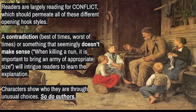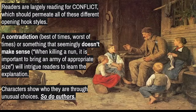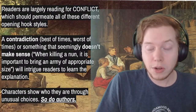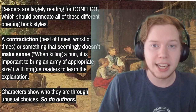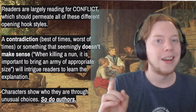Conflict should permeate all styles of hook or opening page. A contradiction — like 'it was the best of times, it was the worst of times' — asks how it could possibly be both. There's a fantasy book called Red Sister that opens: 'When killing a nun, it is important to bring an army of appropriate size.' That tells us nuns in this world must be incredibly powerful or dangerous — which intrigues readers to find out the explanation. Characters show who they are through unusual choices. Think of Die Hard — the tough cop who is terrified on a plane. We're looking for unusual choices in both characters and authors that define them and set them apart.